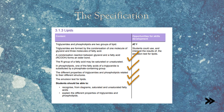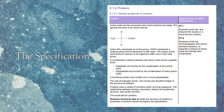So we've completed lipids 3.1.3. Next, we'll move on to proteins, which will include the general structure of amino acids, the formation of dipeptides and polypeptides, as well as the structure of proteins, and finally the biuret test for proteins.